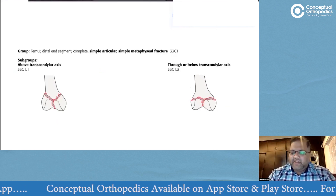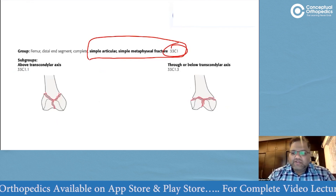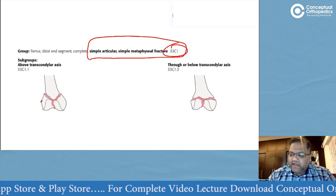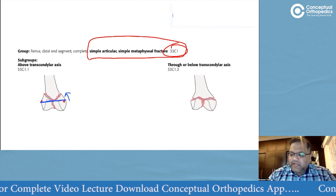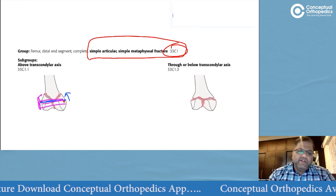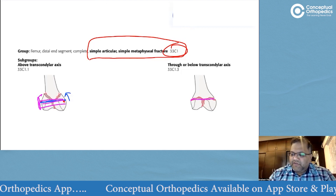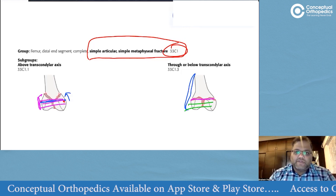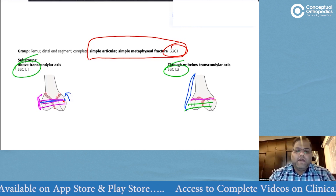Type C fractures are intraarticular. C1 means articular simple and metaphyseal simple. If the metaphyseal fracture is above the epicondylar axis, there is enough bone stock to place a plate with sufficient screws — this is a simpler pattern. If the fracture is at or below the epicondylar axis, we cannot place enough screws for stability, which is why that pattern is given a higher subtype such as C1.3.